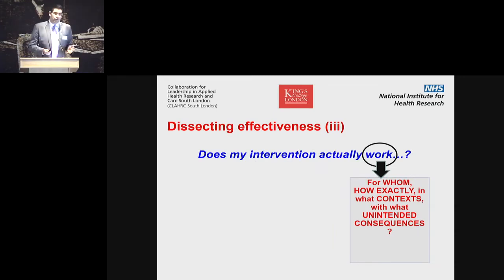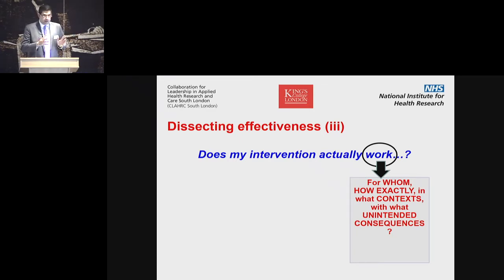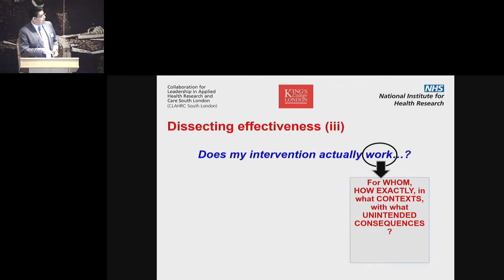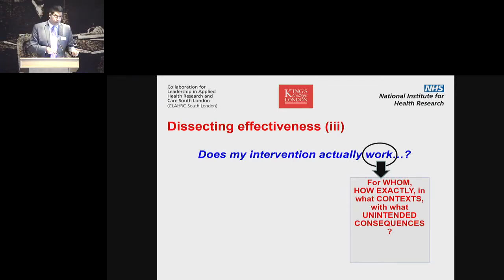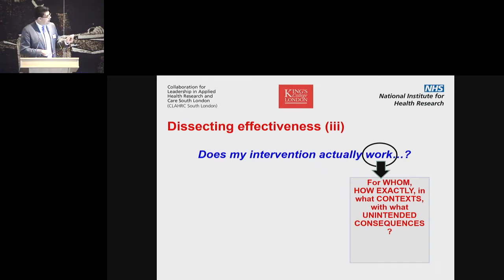Finally, does something work or not? There are some nice papers describing a realist approach to evaluating interventions, where they argue that if you ask "does something work," you're actually asking the wrong question. The right question is: does something work for whom? How exactly are these ingredients working? In what context does it work, and in what context might it actually fail? And what are the unintended consequences of putting your intervention into practice? This is a much more difficult question to address.